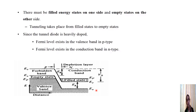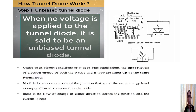Now we look at the detailed working of the tunnel diode step by step. The first step is the unbiased tunnel diode — no voltage is applied, which is an open circuit condition. We start from this open condition and then gradually increase the voltage step by step.